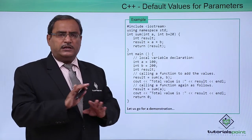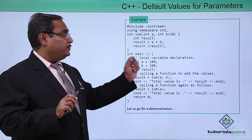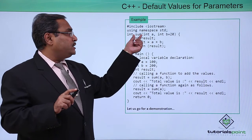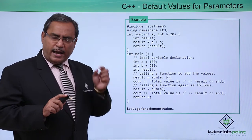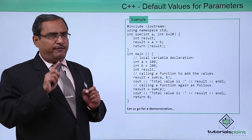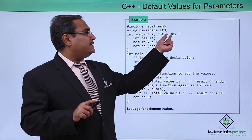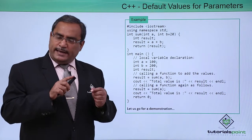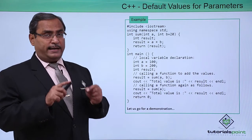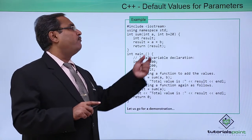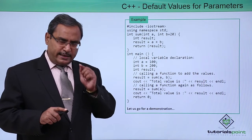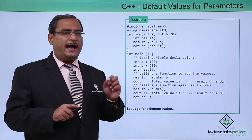The logic of this function is very simple. Since A has no default value, whenever we call the function sum, we must pass a value for A — the argument will be passed for the first parameter. But since B has the default value 20, the second argument may or may not be passed. If we pass the second argument, it will override the default value of 20. If we don't pass it, the default value 20 will be accepted.